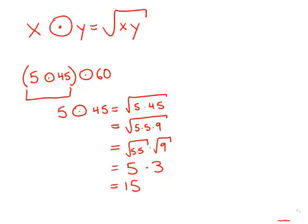So that whole operation, 5 circle dot 45, equals 15. So now it means that what we have here is 15 circle dot 60.